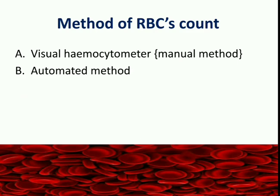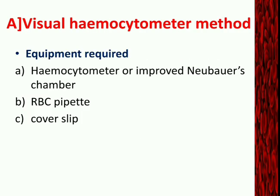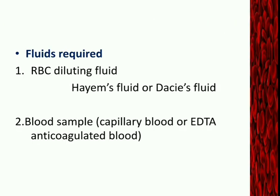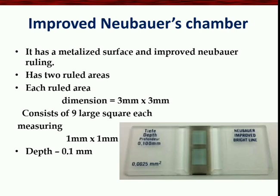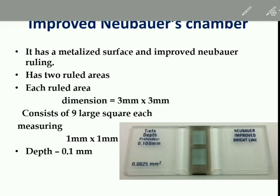We will look at each one in detail. For the visual hemocytometry method, we need a hemocytometer or Improved Neubauer chamber, then an RBC pipette and coverslip. Fluids required are RBC diluting fluid and a blood sample. The blood sample may be capillary blood or EDTA anticoagulated blood. First we will look at the equipment required in detail.